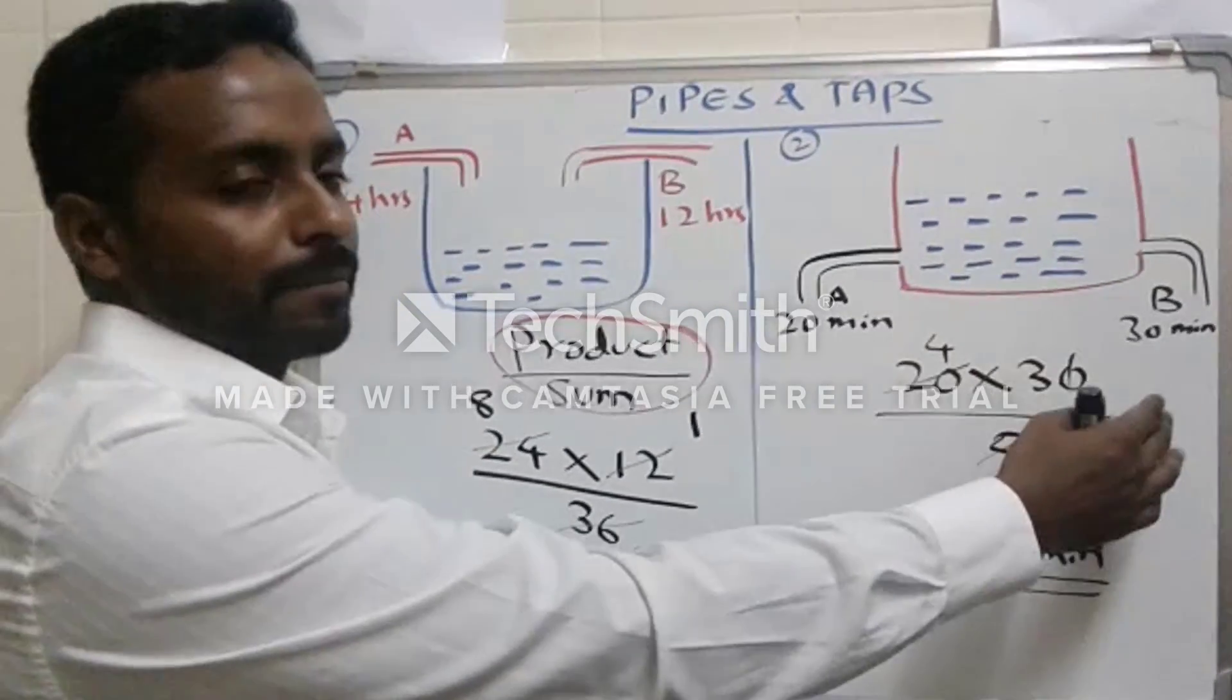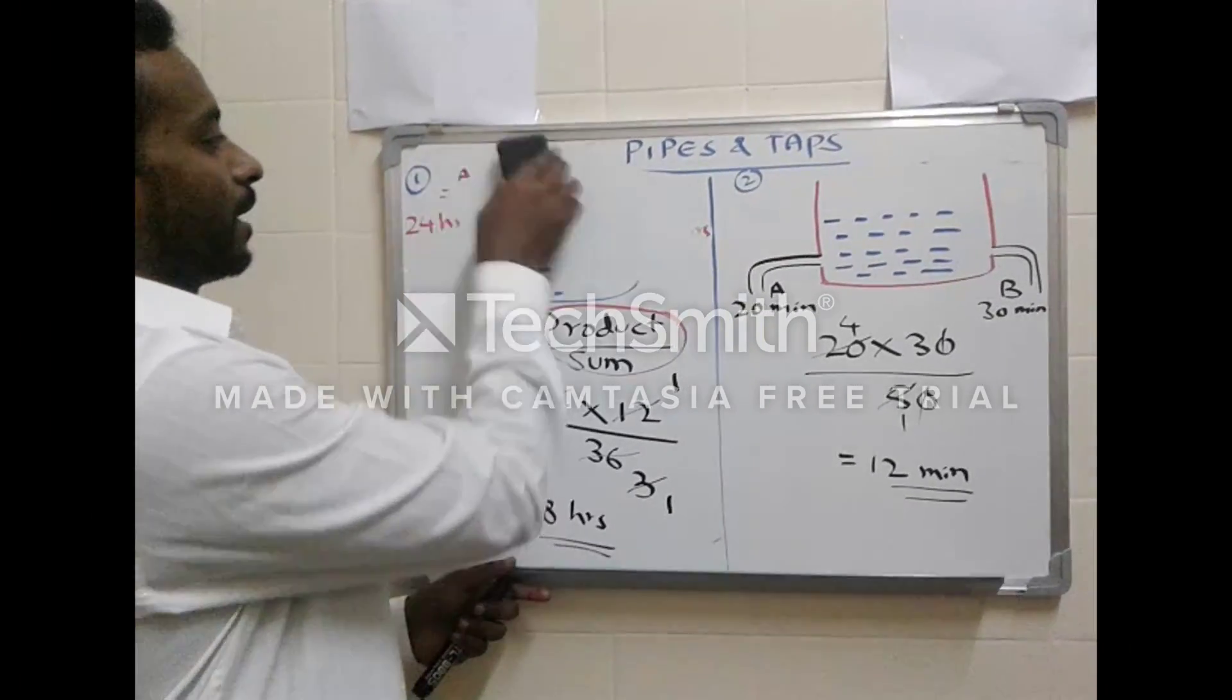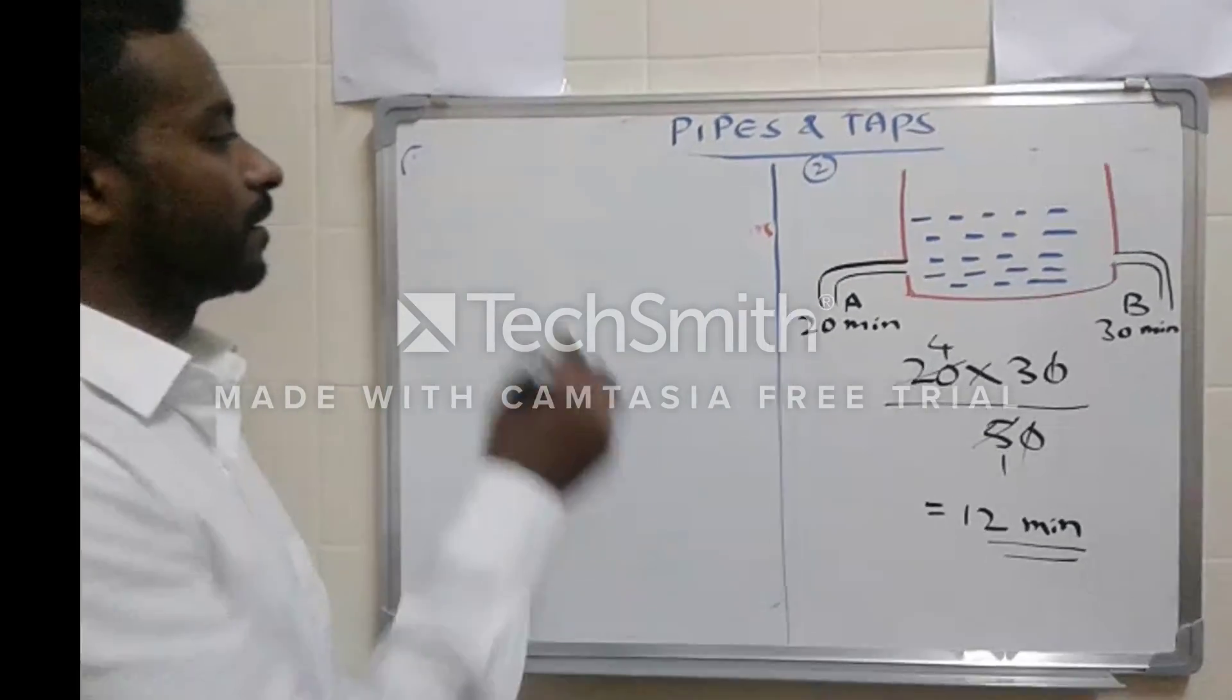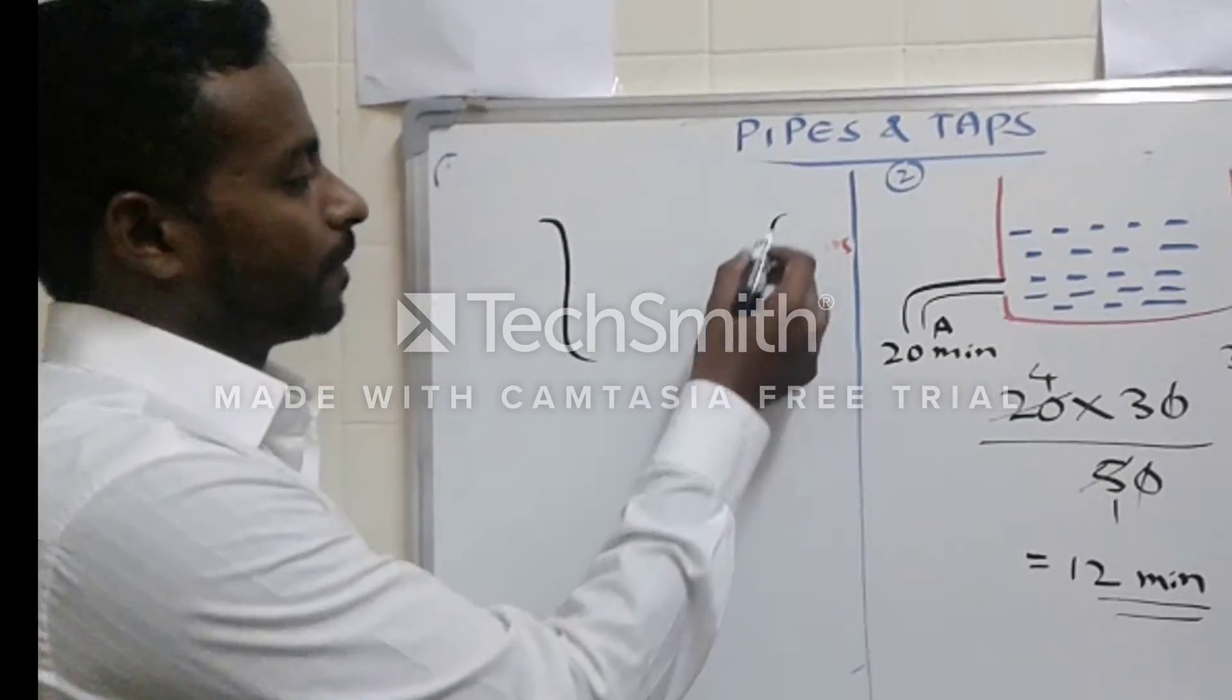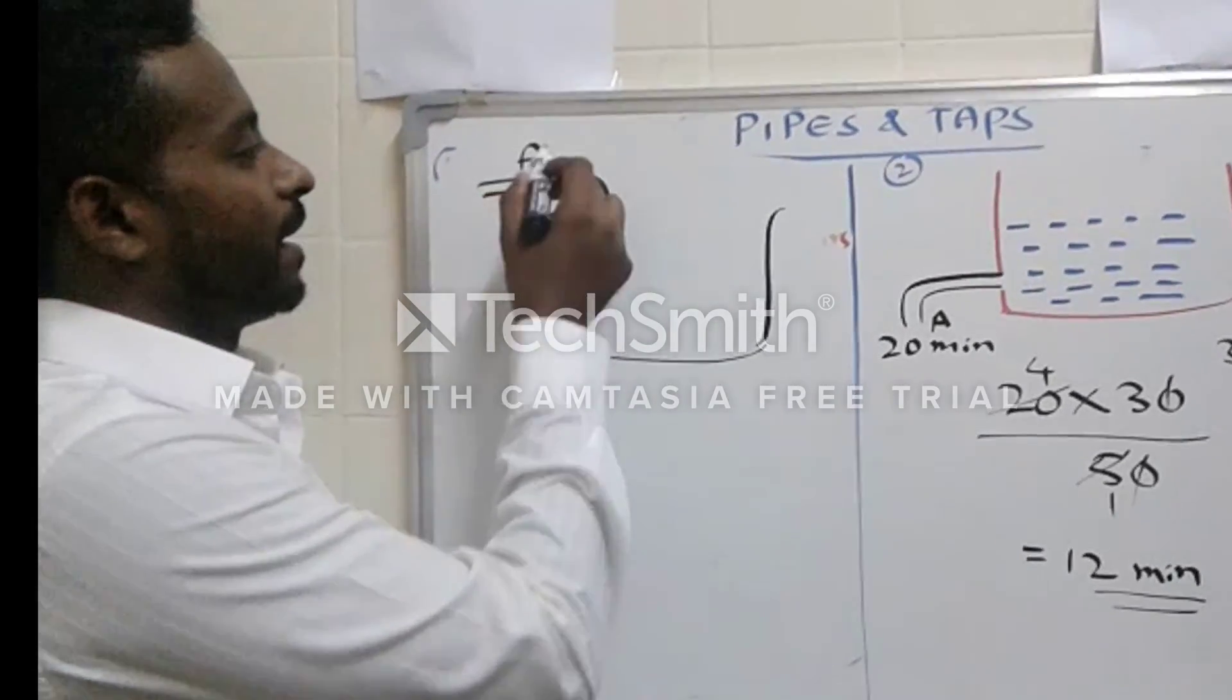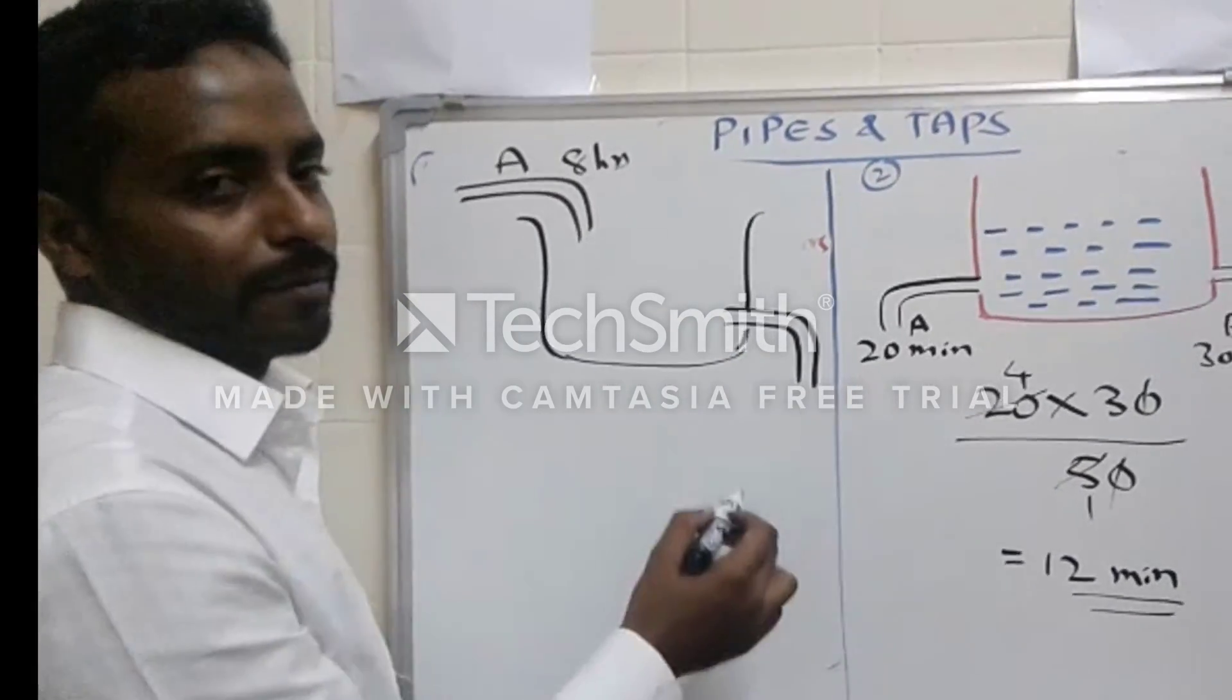Now situation 3, type 3, wherein we have a tank and two pipes. One is to fill, like pipe A takes 8 hours to fill, and we have a situation wherein pipe B takes 16 hours to empty the tank.